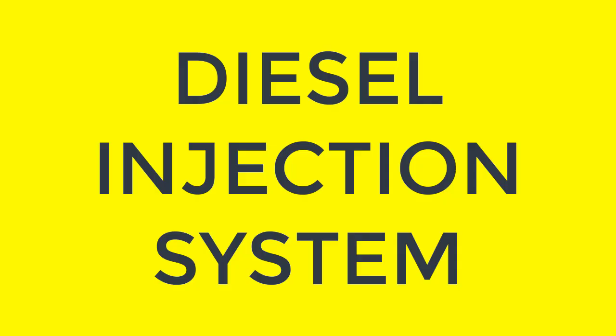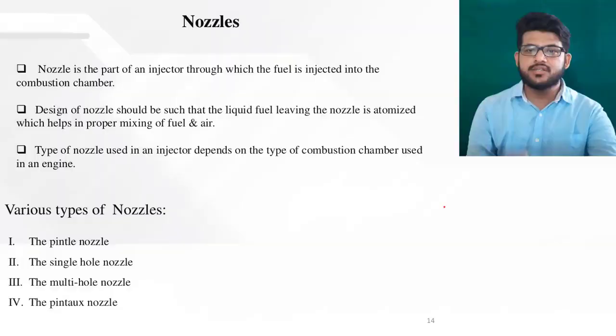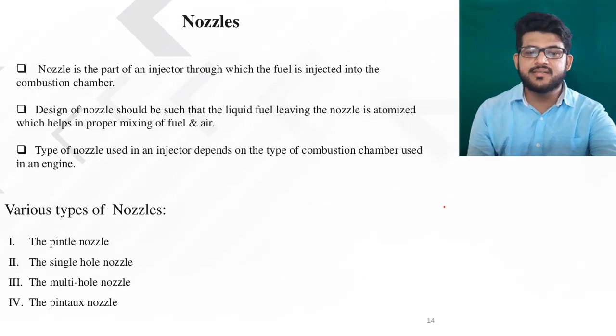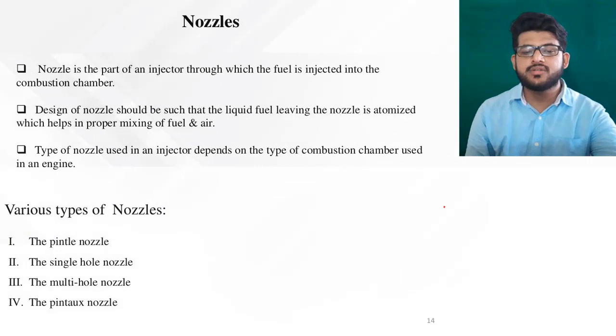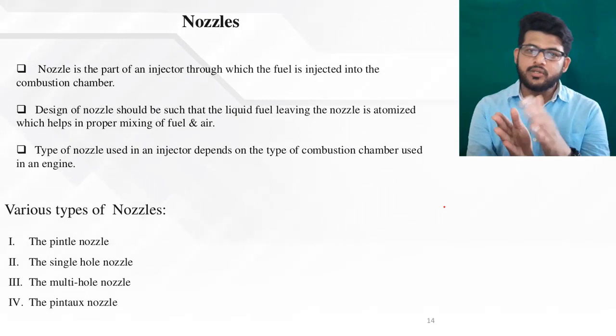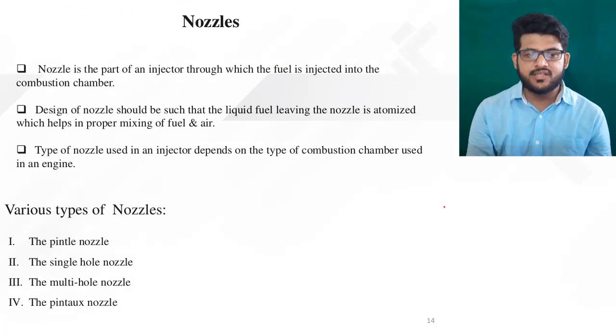Hello students, welcome to the lecture series on monoval engines. In today's session we will discuss what is an injector, what is a nozzle, and what are the different types of nozzles. A nozzle is a part of the injector through which fuel is actually injected into the compression chamber. The design of the nozzle should be such that all the criteria discussed are fulfilled. The types of nozzles used in an injector depend upon the type of compression chamber used in the engine.